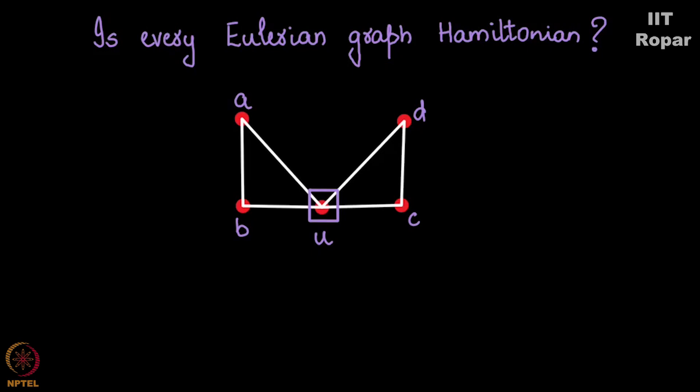let me say A, A, P, U, C, D, U. Do you see that I have to pass through U twice?